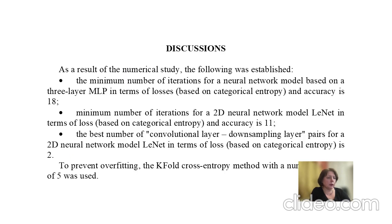As a result of the numerical study, the following was established: the minimum number of iterations for the neural network model based on a 3-layer MLP in terms of loss and accuracy is 18. The minimum number of iterations for the 2-dimensional neural network model LeNet in terms of loss and accuracy is 11. The best number of convolution-layer and down-sampling-layer pairs for the 2-dimensional LeNet model in terms of loss is 2. To prevent overfitting, the cross-entropy method with a number of folds of 5 was used.